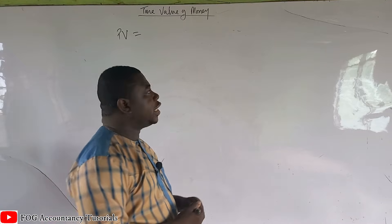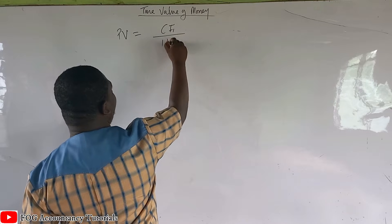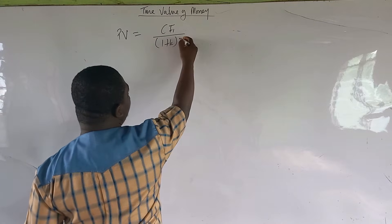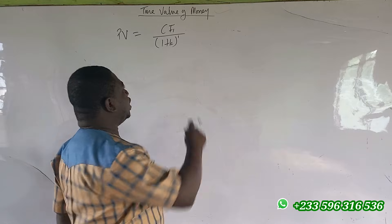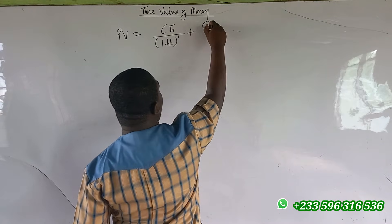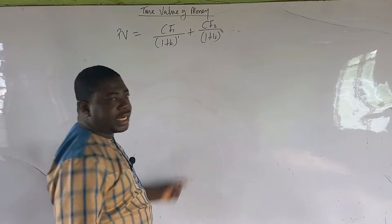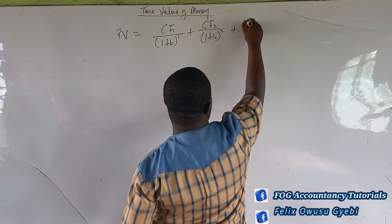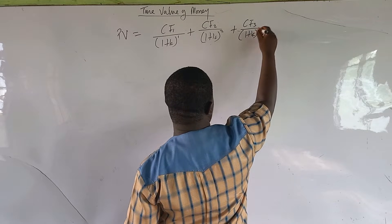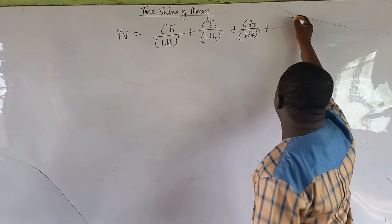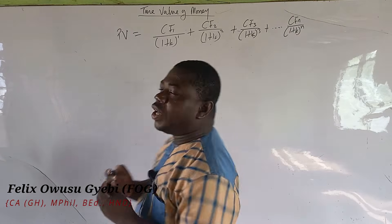If we are dealing with five years, the cash flow of year one will be discounted by one plus k raised to the power one. The cash flow of year two will be discounted by one plus k raised to the power two, year three by one plus k raised to the power three, and so on up to year n discounted by one plus k raised to the power n.